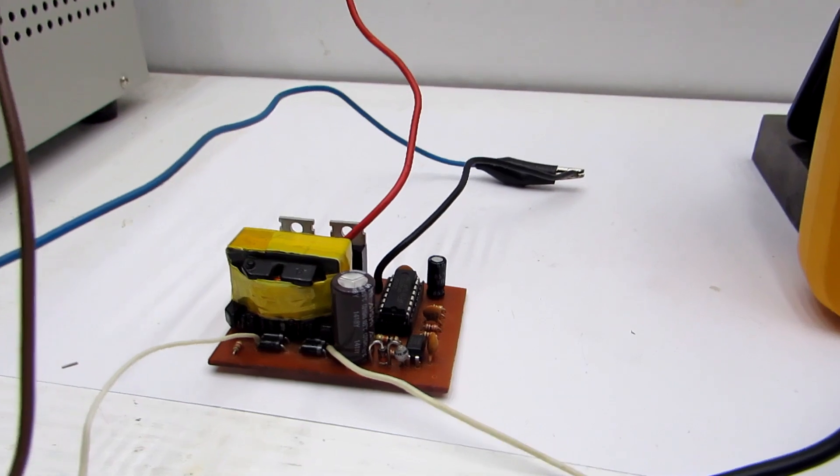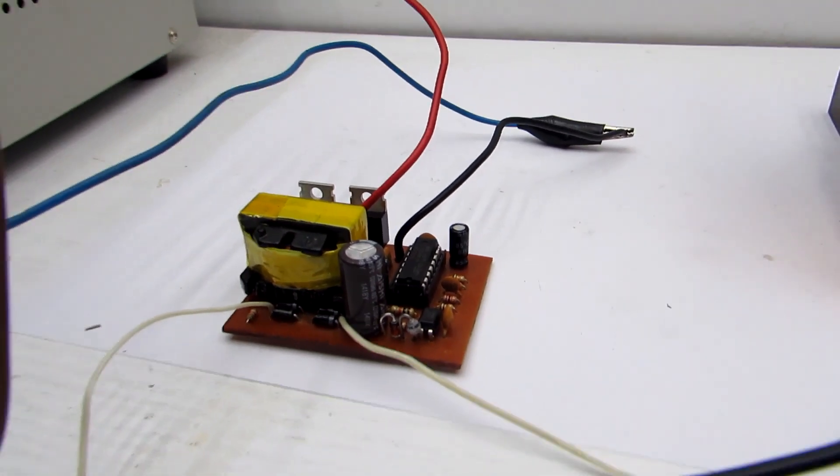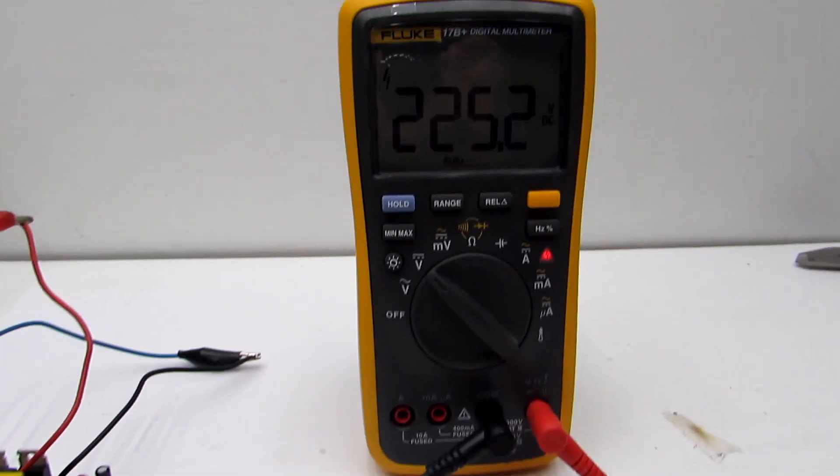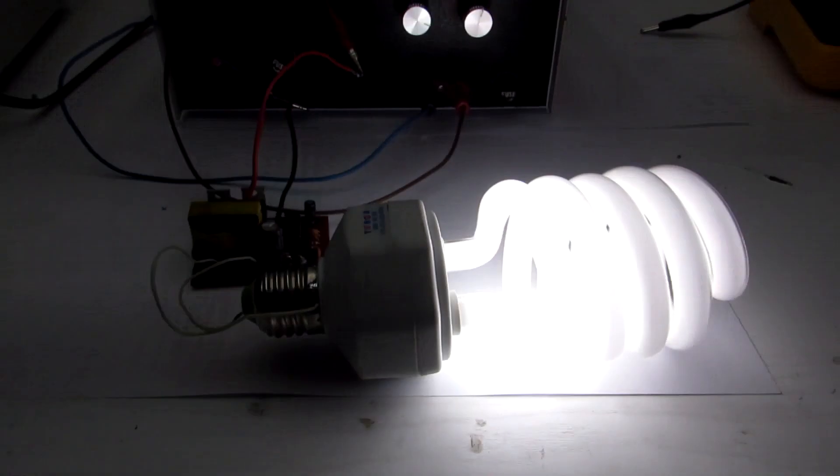At once I will say that this converter produces a constant voltage at the output, so devices containing a network iron transformer and AC motors can't be connected to it.